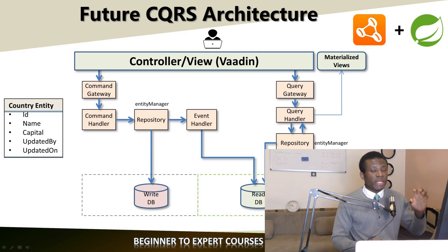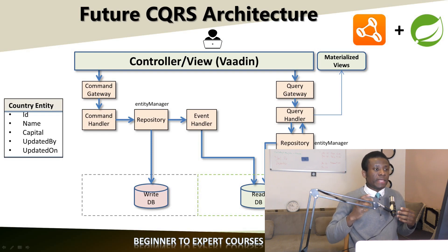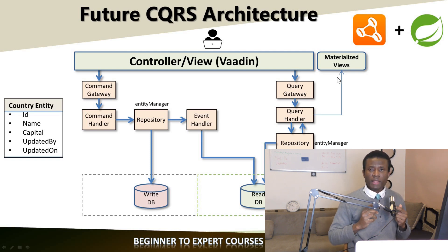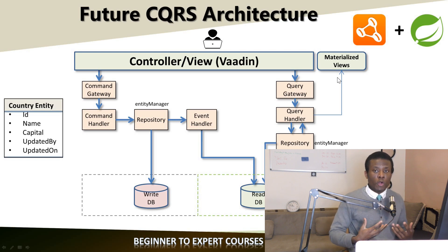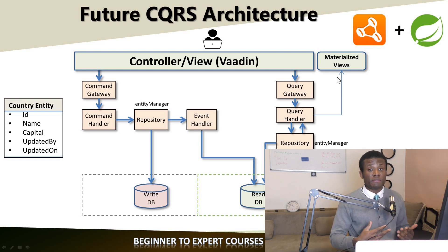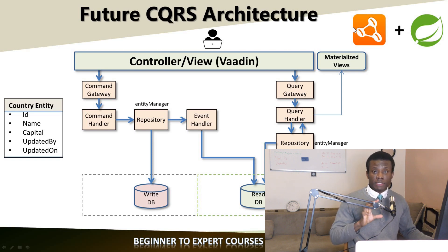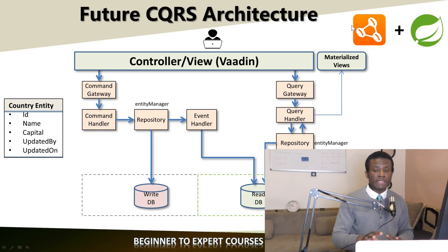When you want to do a query — get a list of items or search by ID — it goes to the query gateway, then to the query handler, then to the repository, and fetches data from the read DB. The view the user sees is what we have as materialized views, which contain data coming from the read DB. The read DB always has to be synchronized with the write DB because the user reads from the read DB. This is how the CQRS architecture works — it's called CQRS and event sourcing. Event sourcing means events occurring in your application are logged and captured so you can recreate the state of your application from the series of events. We use two tools: the Axon platform, made up of the Axon Server and Axon Framework, which integrates well with Spring Boot.